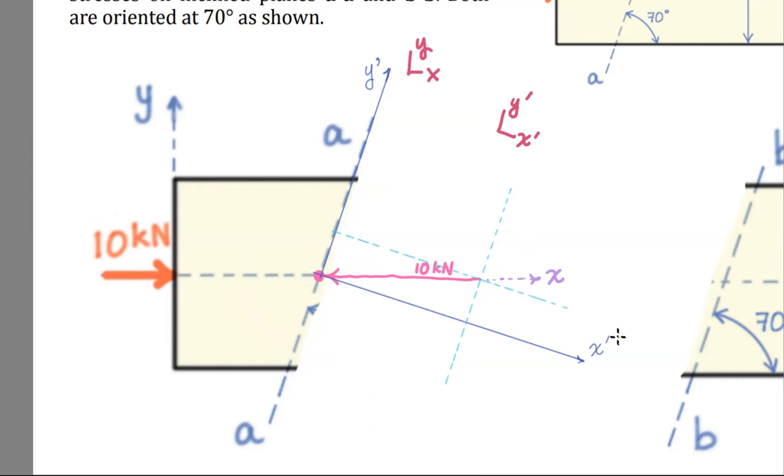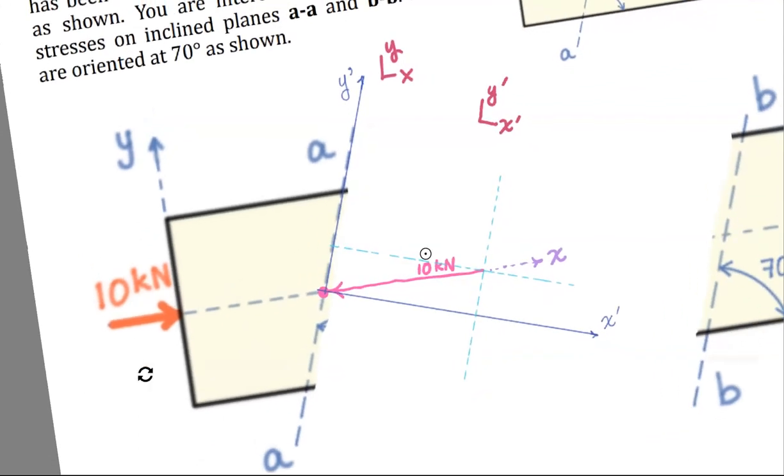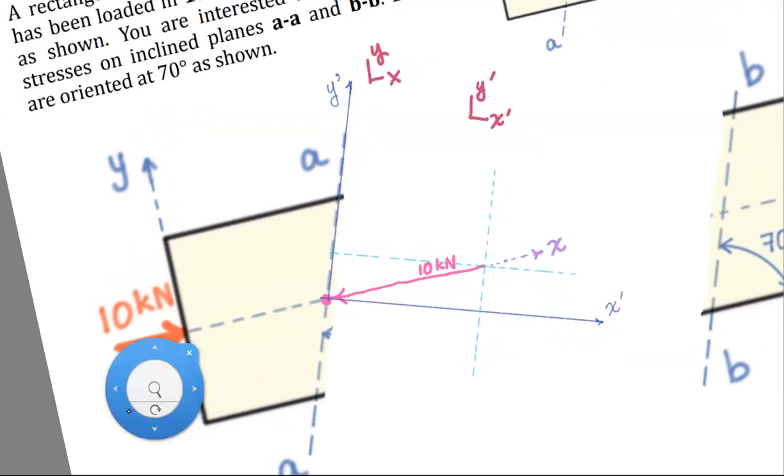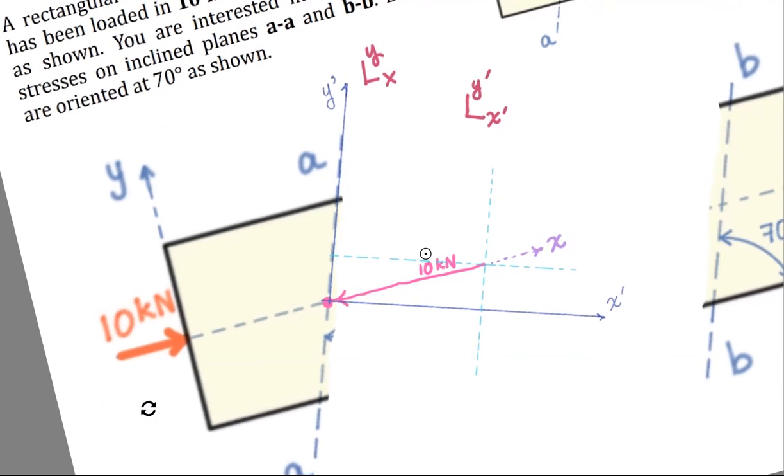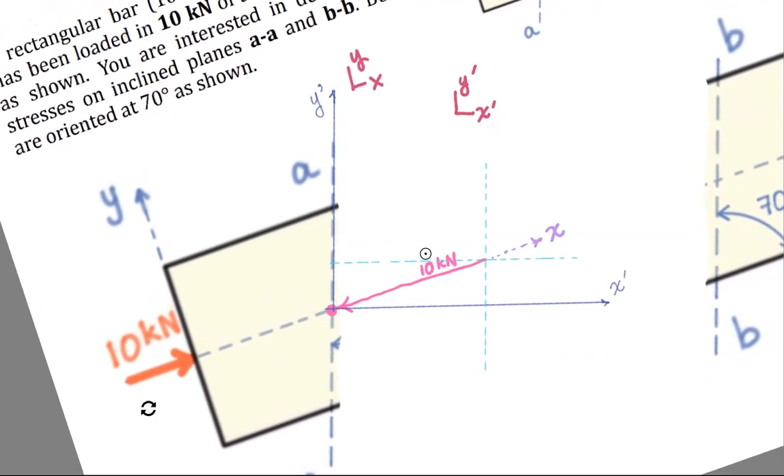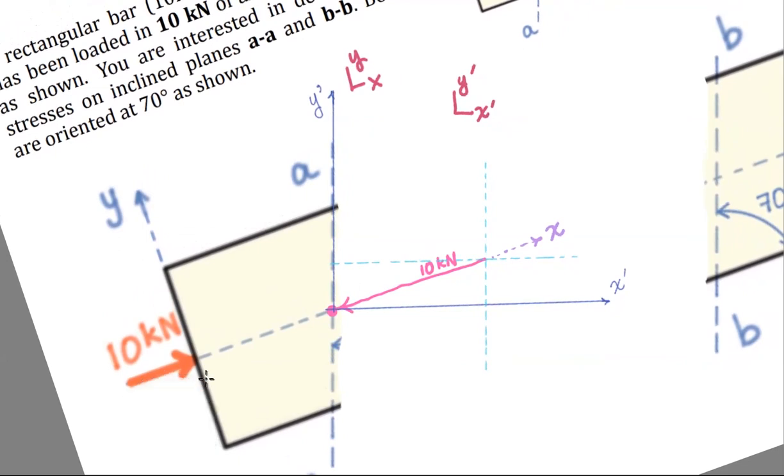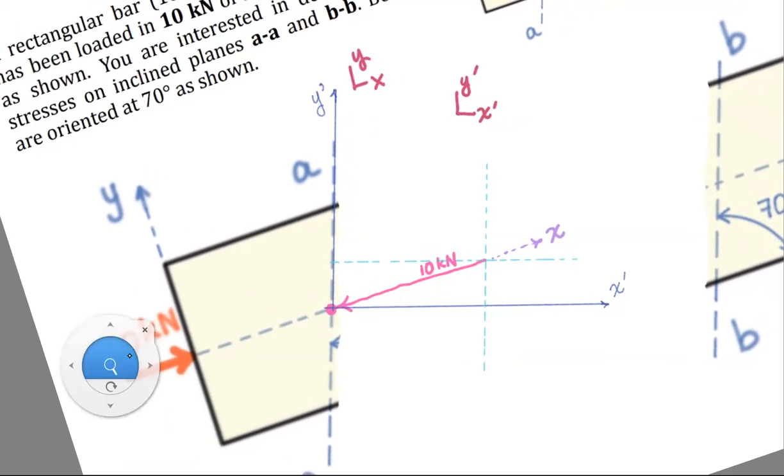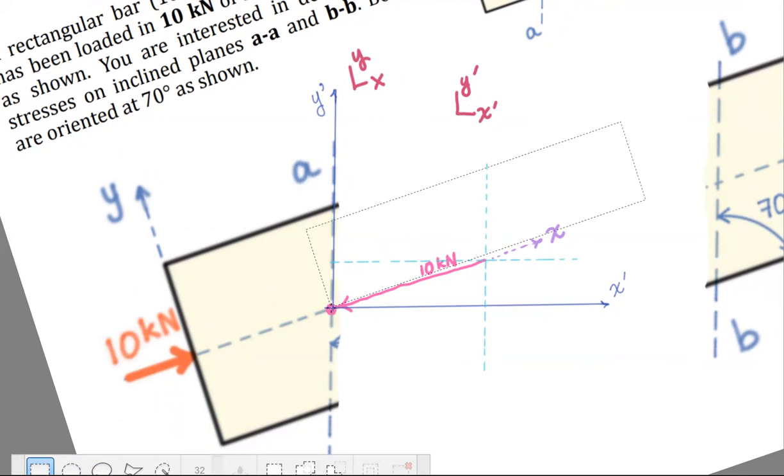I'm doing that because I need to break this vector into its components that are perpendicular and parallel to the cut plane AA. Now I'm going to do a little trick here because I can. I'm just going to rotate my screen. Watch this. I'm rotating the whole drawing. See how the text up at the top is rotating.